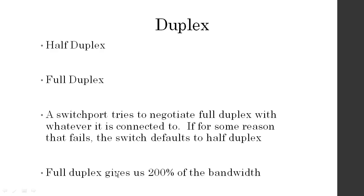Half duplex is like a walkie-talkie — you can only send or receive at the same time, not both. Full duplex is what most of us are running now. With full duplex, there are no collisions — we can send and receive at the same time. Just because you're receiving data doesn't mean you can't send data.